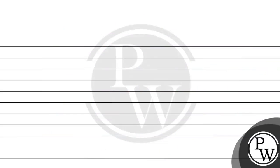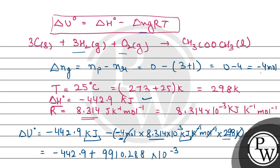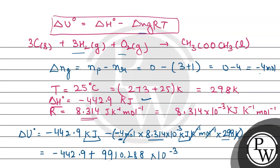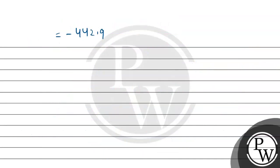Now we will write in round figures. We have -442.9 and we will add 9.91 after rounding off. Plus minus becomes minus overall. The sign will be negative as 442.9 is a greater number than 9.91.